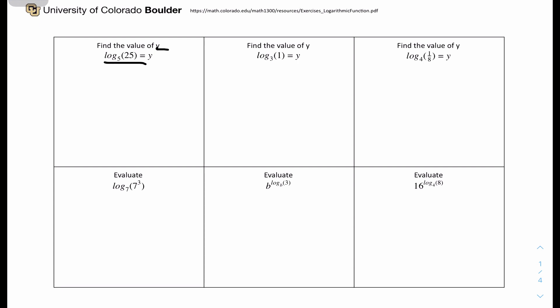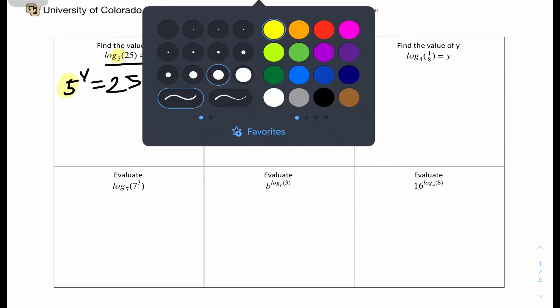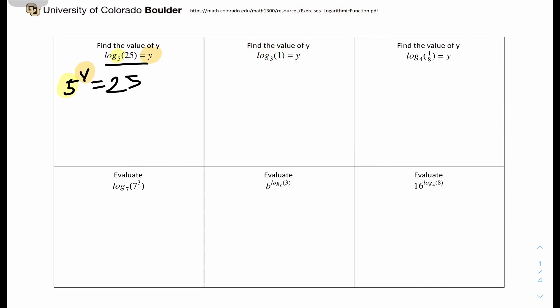Let's get into the first question: find the value of y. We can convert this equation into its exponential form. It will be 5 to the power of y equals 25. You have to find a value of y, which is the power such that 5 to that power equals 25. It's quite simple — 5 times 5, or 5 squared, is 25. Therefore y equals 2.